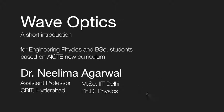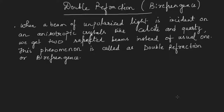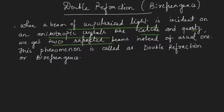Now we are going to study another very important phenomenon, which will also be used to polarize light. This new phenomenon has remarkable applications and is known as double refraction. When a beam of unpolarized light is incident on anisotropic crystals — such as calcite or quartz — we get two refracted rays instead of one. This phenomenon is known as double refraction or birefringence.